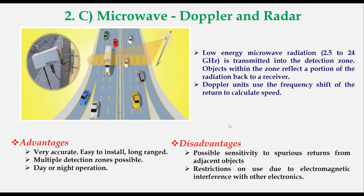Another method is microwave Doppler and radar. Doppler microwave detection devices transmit a continuous signal of low energy microwave radiation at the target area and then analyze the reflected signal, allowing the device to detect moving vehicles. Radar is capable of detecting distant objects and determining their position and speed of movement. The advantage of this method is that it is very accurate, easy to install, long-ranged, allows multiple detections, and is not affected by day or night operations. The disadvantage is that it is sensitive to spurious returns from adjacent objects and has restrictions on use due to electromagnetic interference with other electronic devices.